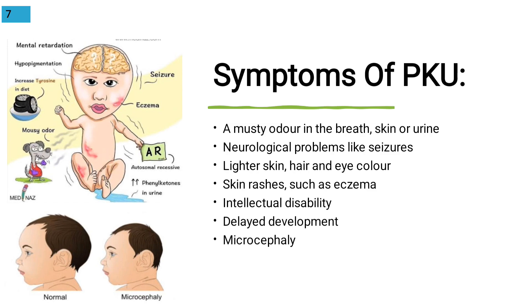Newborns should be tested within 24 to 48 hours through clinical investigation to identify phenylketonuria. Symptoms include musty odor in the breath, skin, or urine, neurological problems like seizures, lighter skin, hair and eye color, skin rashes, intellectual disability, delayed development, and microcephaly. These symptoms can be managed if treated early at the time of birth.